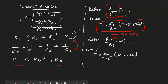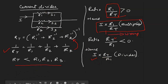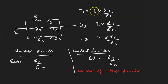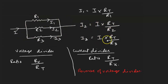This is the key difference between the voltage divider and the current divider. In a current divider, you take the input current times the ratio RT divided by R1, where RT is the total resistance of the parallel circuit. So the current in the first branch is I1 equals I times RT by R1. Similarly, I2 equals I times RT by R2, and I3 equals I times RT by R3.